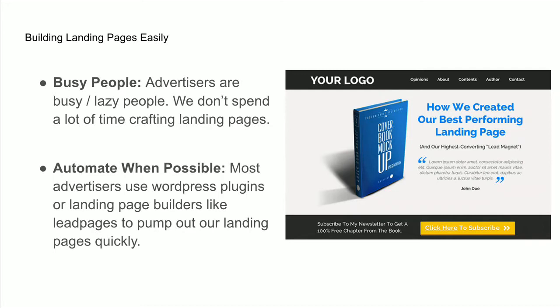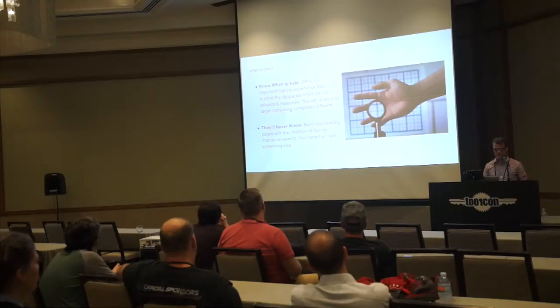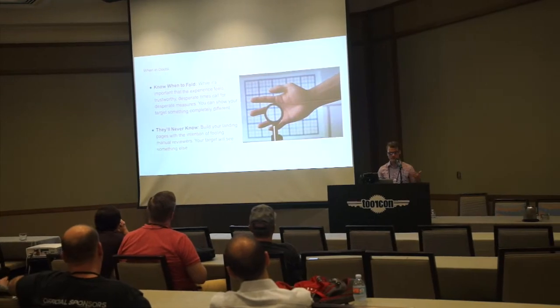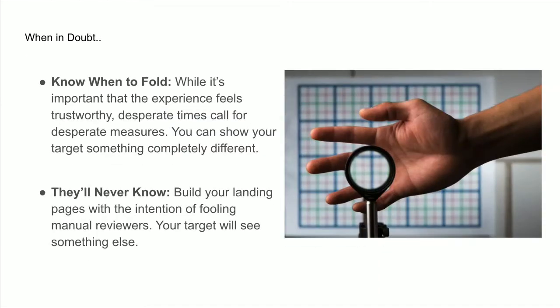For the most part, advertisers are busy or lazy people. We don't spend a lot of time crafting landing pages. Instead, we look at plugins on WordPress or software like Lead Pages to build landing pages for us, then mold the content into the landing page. When someone clicks an ad expecting a for-hire page, we set up a landing page quickly and direct users there. There's no need to get very technical with this, because when building an attack page for your audience, you have to understand there are two different ways people are going to see it — what you want them to see, and what the moderation team will see. How we separate that is through something called cloaking.